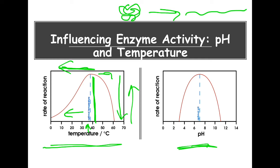The same concept applies to pH. Enzymes have particular pH values they prefer to work at — for example, pepsin in your stomach works optimally at a pH of 2, which is why hydrochloric acid is present there. If this particular enzyme works optimally at a pH of 7, deviating from that pH in either direction causes the rate of the enzyme reaction to drop. So pH and temperature are two key ways enzyme function can be influenced.